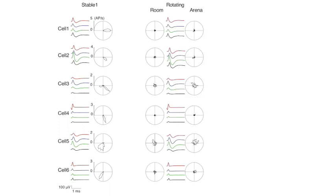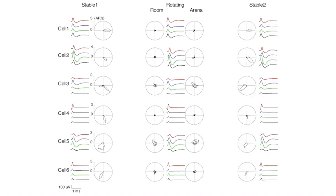As expected, during the stable task, head direction cells show directional tuning, but directional tuning was degraded during arena rotation. The tuning returned during the subsequent stable condition.